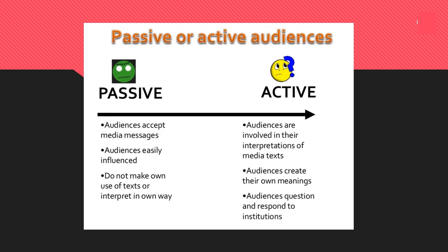Some key terminology relating to audiences is passive and active. This links closely with Learning Outcome 6, where you talk about the effects of the media. Some theorists say audiences are passive and some say they are active. A passive audience member is more likely to accept what they see on screen and be influenced by what they're watching or listening to. An active audience can tell the difference between fiction and reality, create their own meaning from what they see, and are less likely to be affected by it.